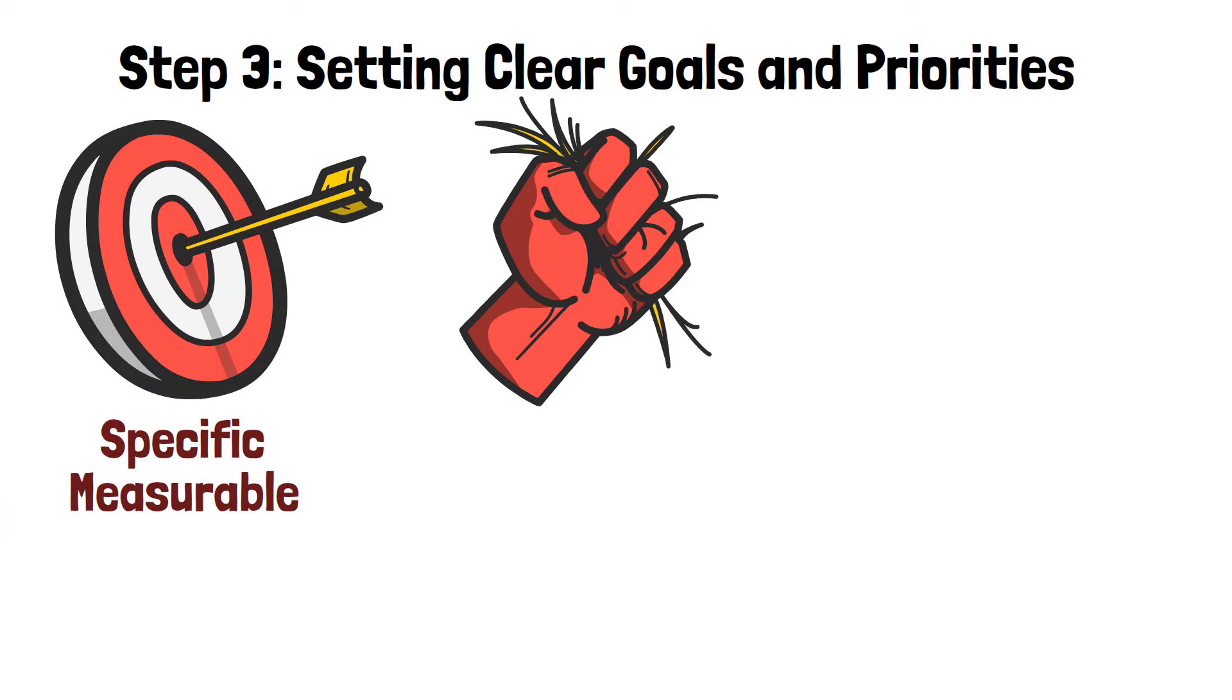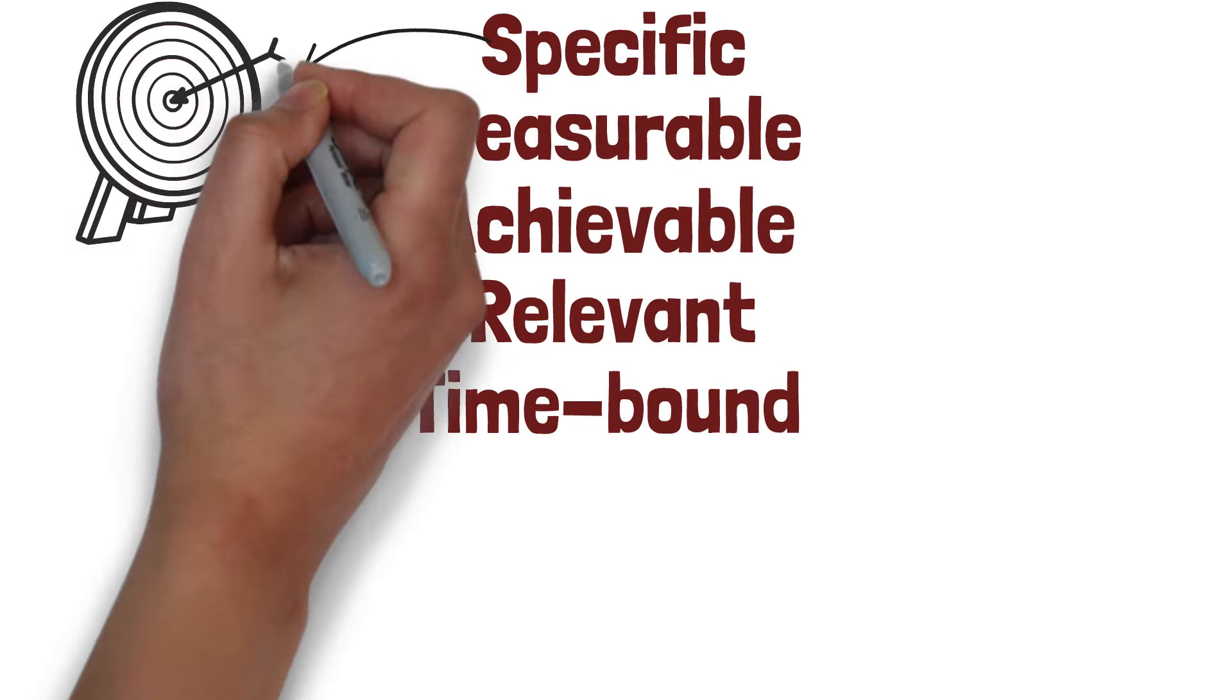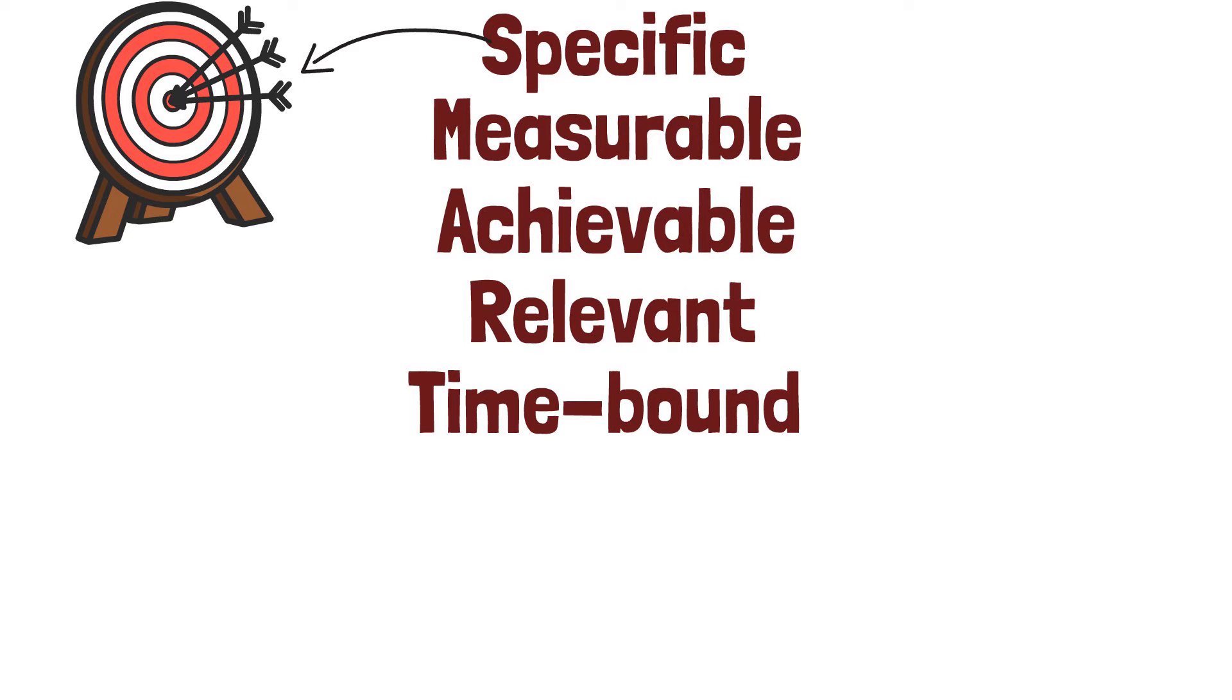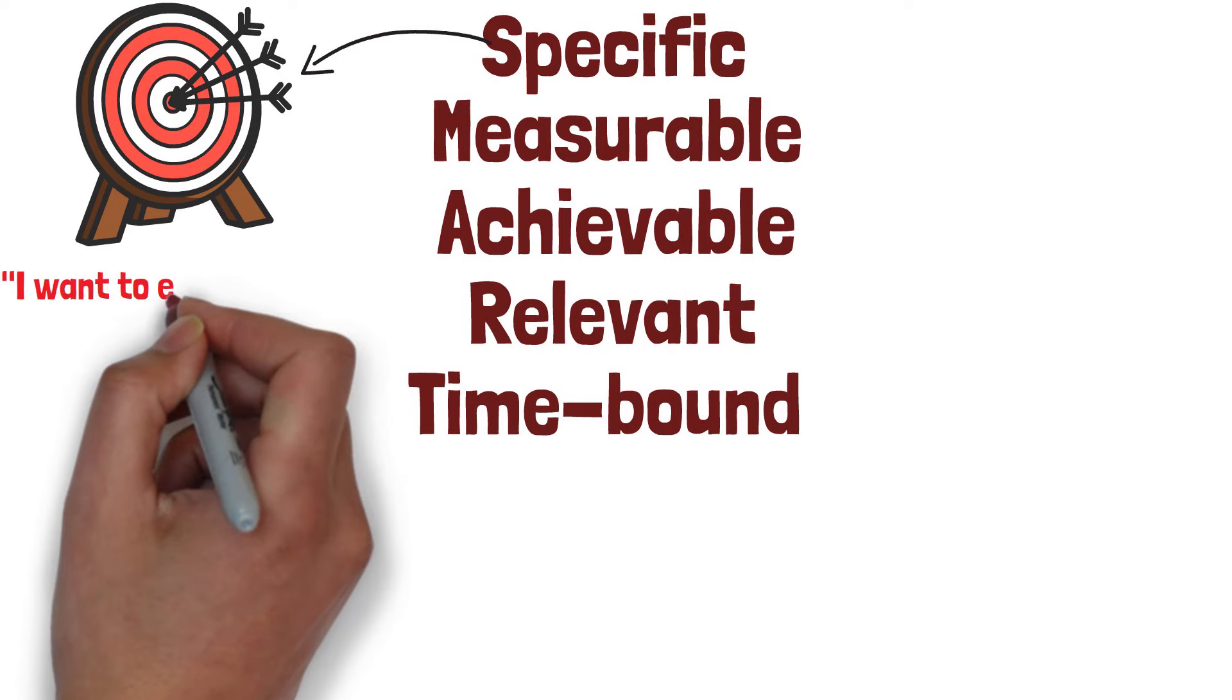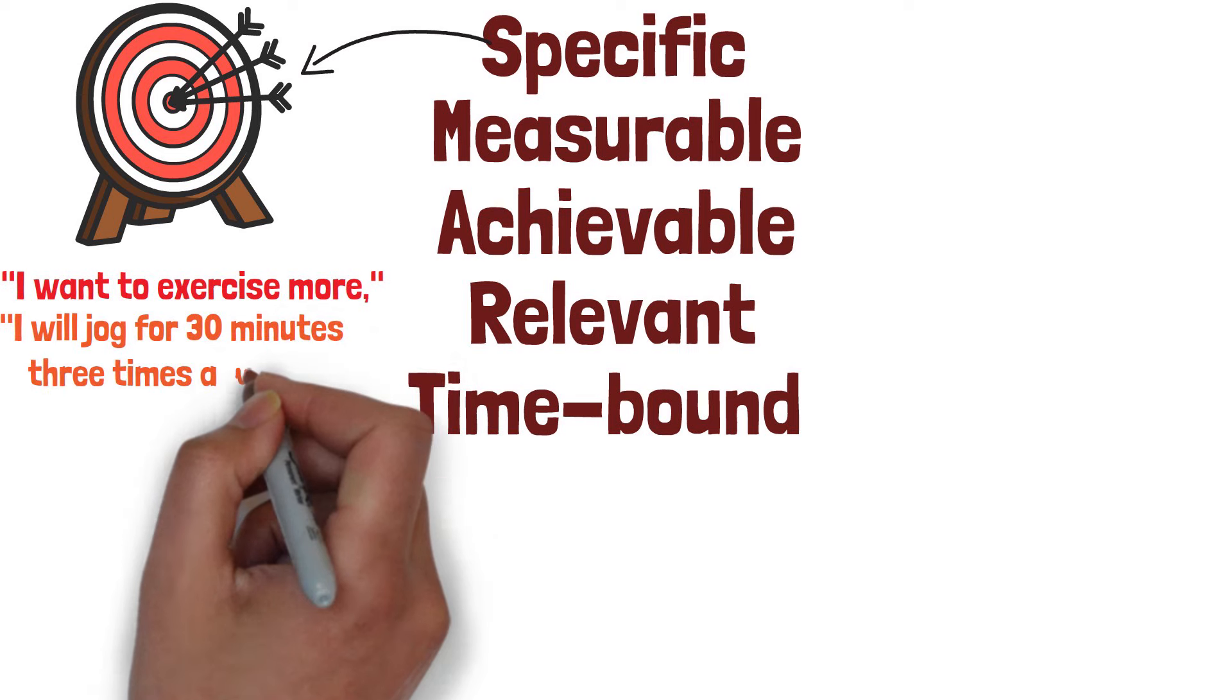Specific, measurable, achievable, relevant, and time-bound. Let's break it down a bit more. Specific, define your goals with clarity and precision. Instead of saying, I want to exercise more. Try, I will jog for 30 minutes three times a week.